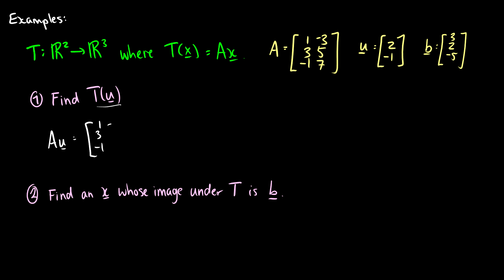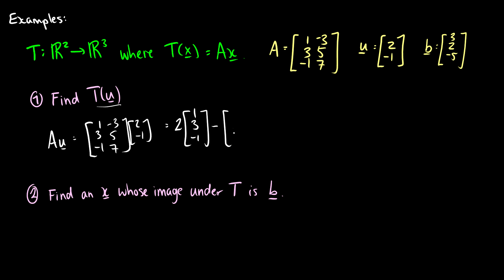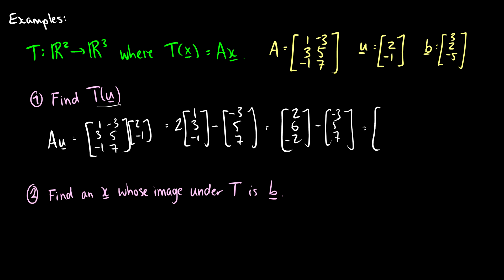We take the matrix [1, 3; -1, -3; 5, 7] and multiply by the vector u = [2, -1]. This is 2 times the first column minus the second column, giving us [2, 6, -2] minus [-3, 5, 7], which equals [5, 1, -9]. So T(u) = [5, 1, -9].